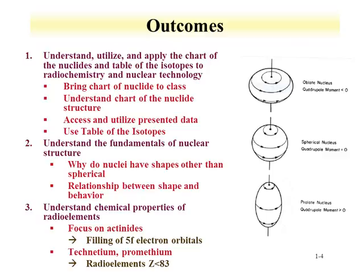The course outcomes are listed here, and will be discussed in more detail as the course develops. The first outcome involves learning how to use the chart of the nuclides and the table of the isotopes, and how they apply to radiochemistry and nuclear technology. By the end of the course, you should be able to operate the chart of the nuclides — bringing it to class is essential.